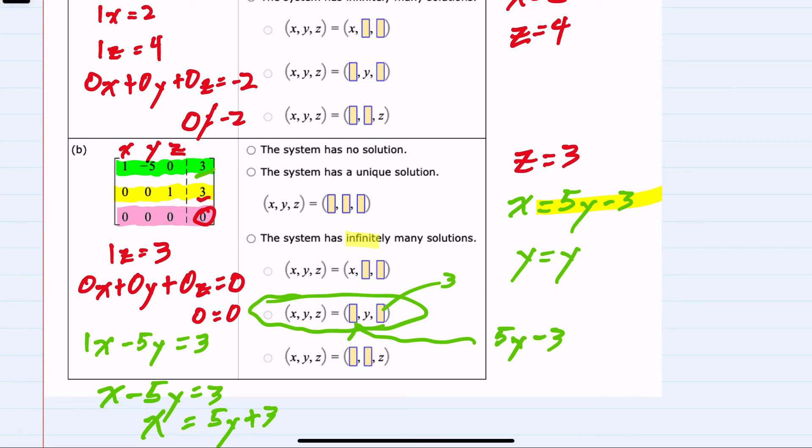I could use this form, replacing z with 3 and replacing x with 5y plus 3. This is going to have infinitely many solutions. But I know that the form will always be that z is 3, y is going to vary, but whatever y is, x will be 5y plus 3.